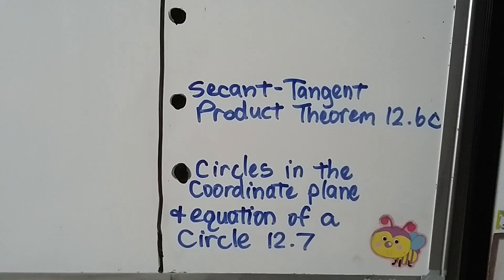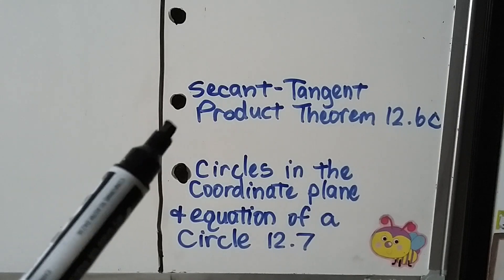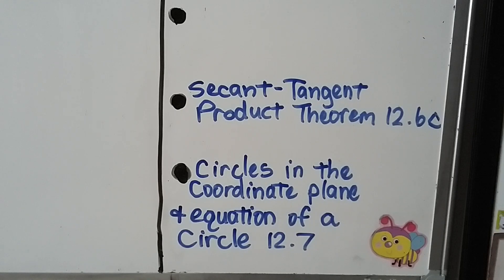In the final part of our lesson for 12.6, we're going to talk about secant tangent product theorem, 12.6c. Then we're going to move on to video 12.7, that's all in one lesson, there's no ABC. We're going to talk about circles in the coordinate plane and equation of a circle. Once we finish this, we're going to move on to chapter 13. And then after chapter 13, we're going to be finished with high school geometry.